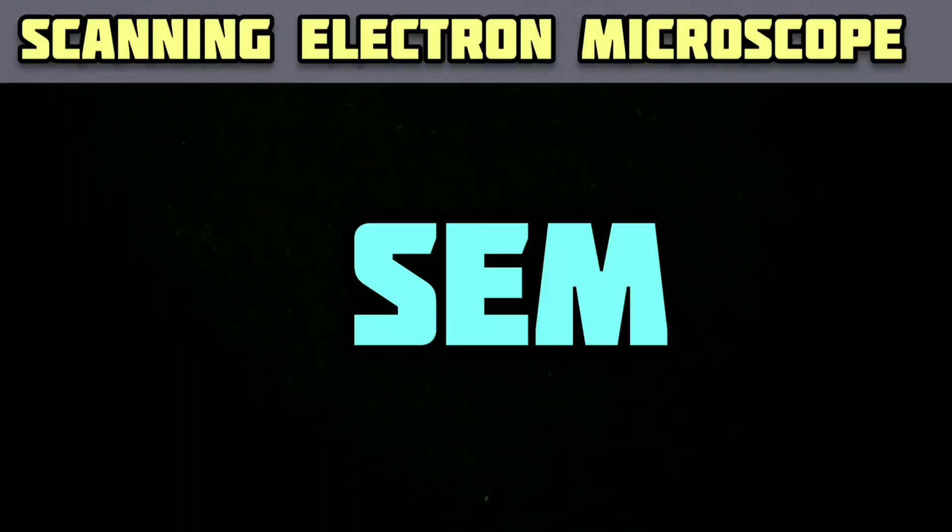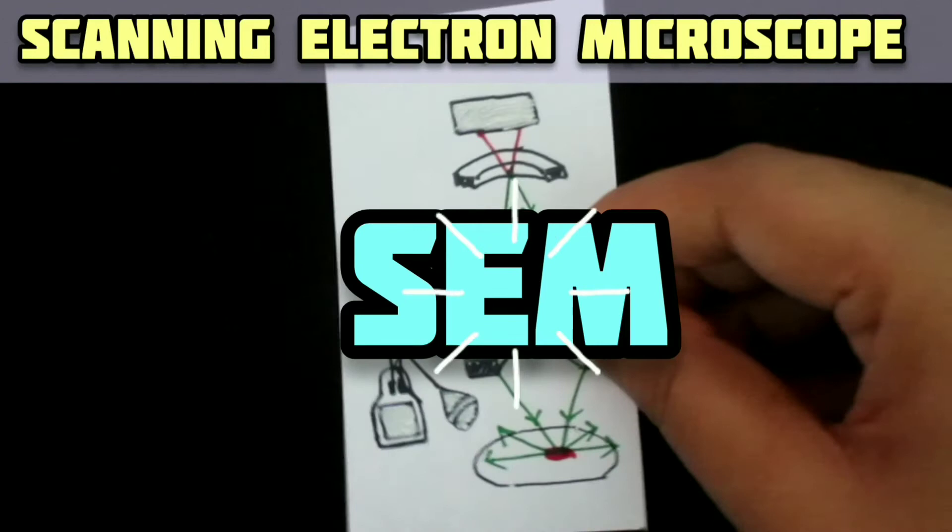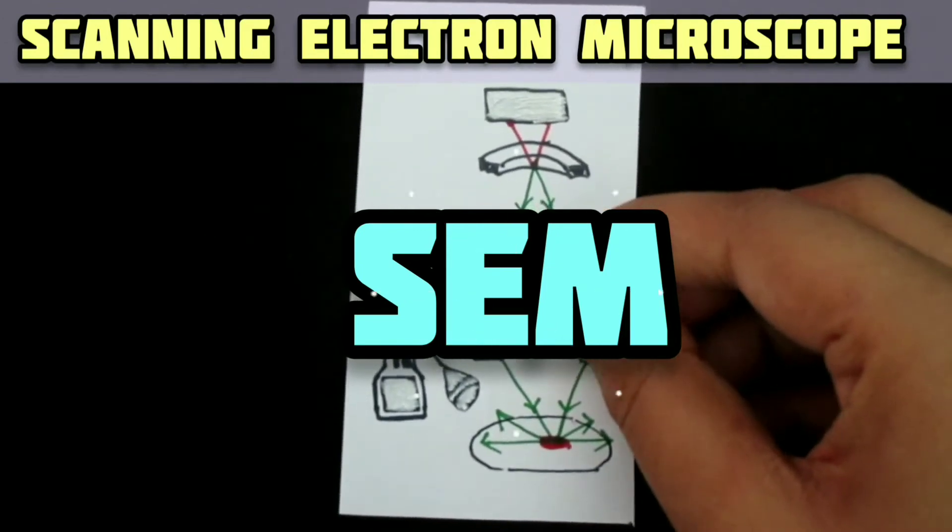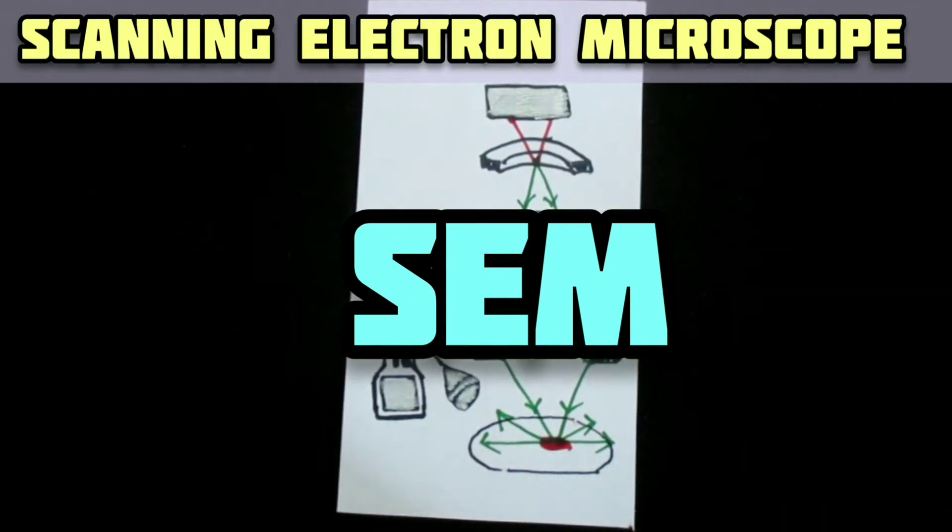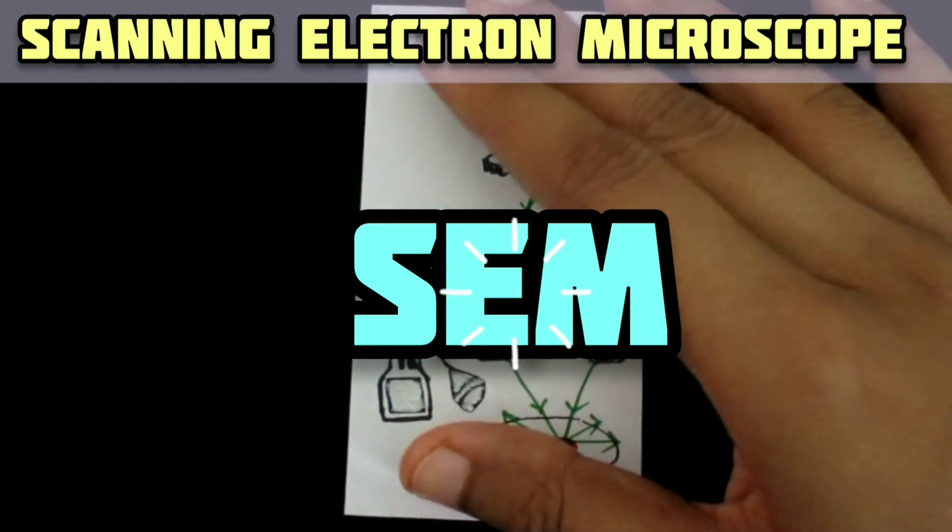In scanning electron microscopy, the specimen views the surface. Specimens are fixed, dried and coated with a thin layer of a heavy metal such as gold or a mixture of gold and palladium.